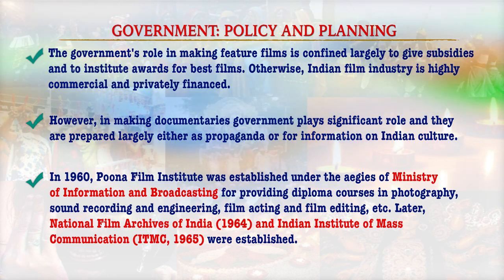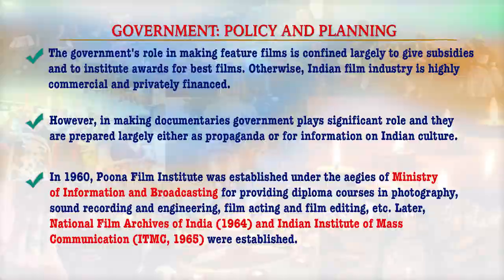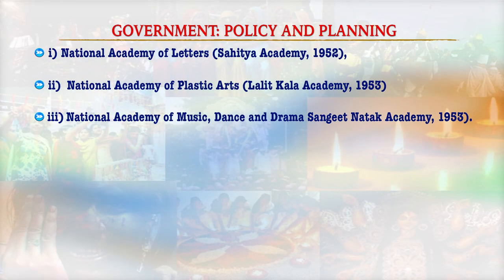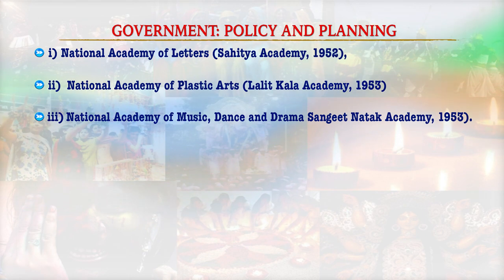Later, the National Film Archives of India in 1964 and the Indian Institute of Mass Communication in 1965 were established. Immediately after independence, three academies were also set up: the National Academy of Letters (Sahitya Akademi) in 1952, the National Academy of Arts (Lalit Kala Akademi) in 1953, and the National Academy of Music, Dance and Drama (Sangeet Natak Akademi) in 1953. The aim of establishing all these academies was not only to revitalize, nourish and nurture traditional arts, but also to create better opportunities for artists.